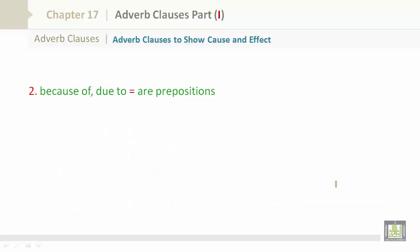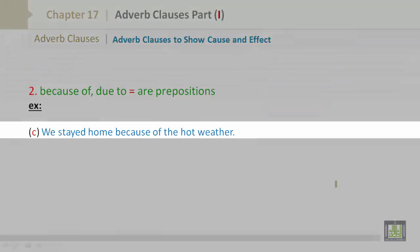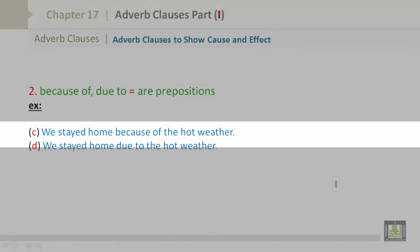Number 2. Because of, or due to, are prepositions. For example, we stayed home because of the hot weather. We stayed home due to the hot weather.